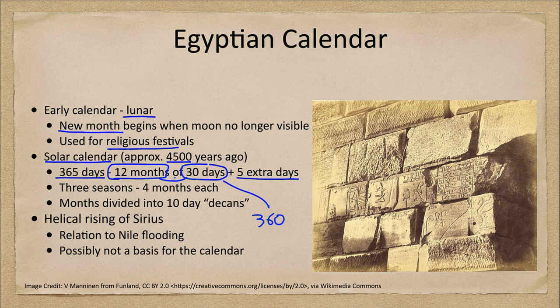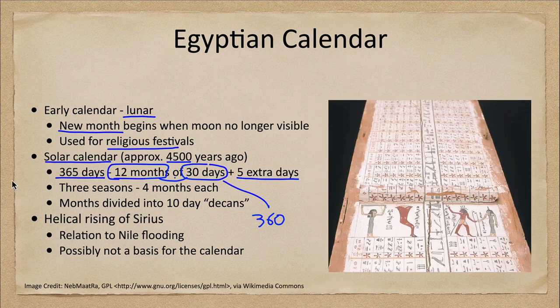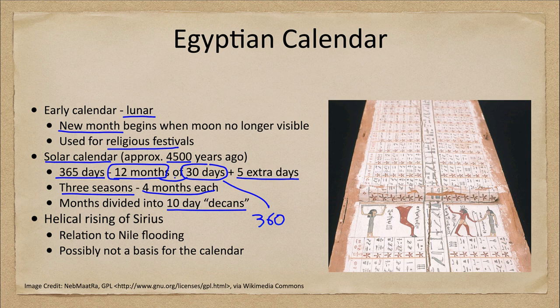The year was also divided into seasons — three seasons, not the four we have today, each of four months. Those months were further divided into 10-day periods called decans, so their week would have been 10 days long, with exactly three weeks in every month.